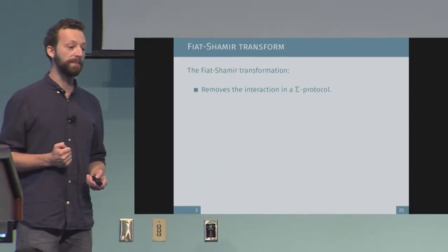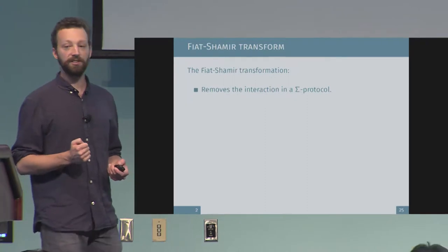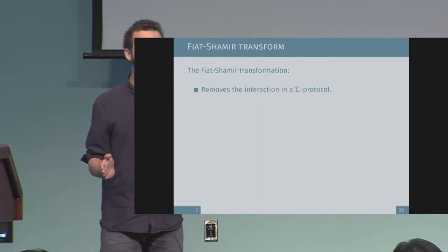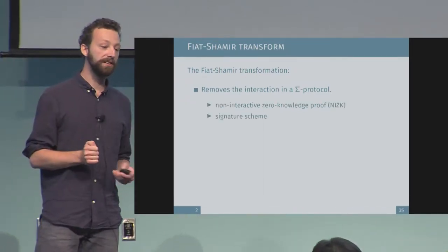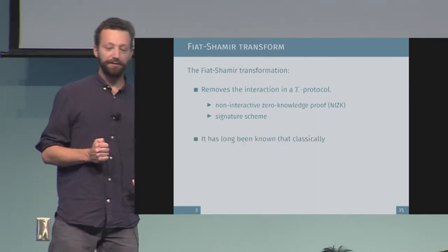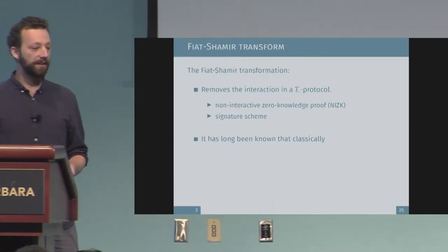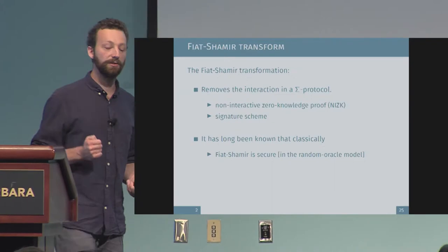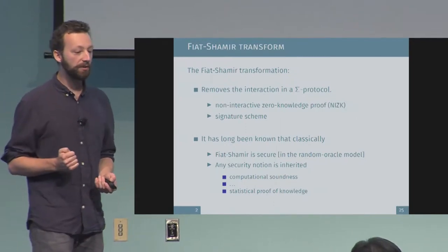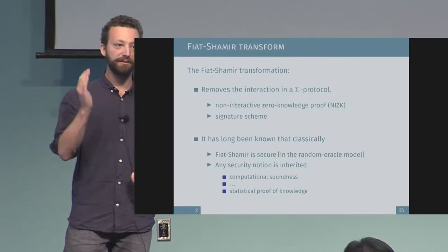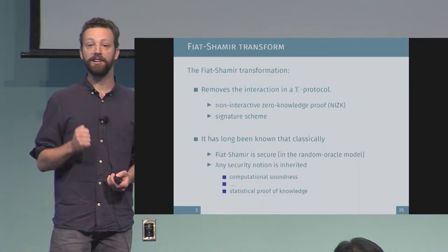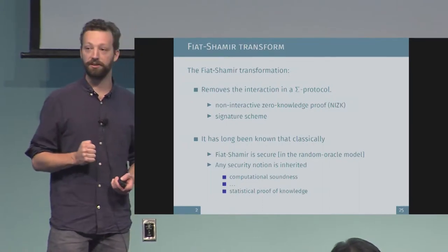First, about the Fiat-Shamir transform. In a nutshell, it takes away the interaction from a Sigma protocol. So given a Sigma protocol, which is an interactive scheme, we apply the transform to obtain non-interactive objects. Of this transformation, it has long been known that classically it is secure in the random oracle model — in the sense that any security notion, ranging from computational soundness to statistical proof of knowledge, is inherited if the Sigma protocol satisfies that property.